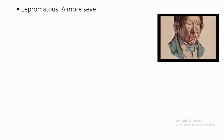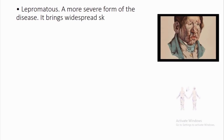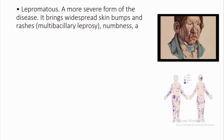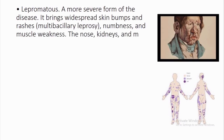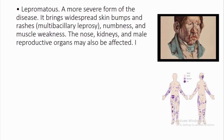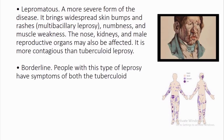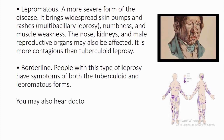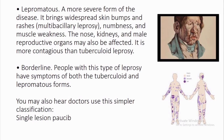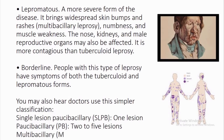Lepromatous: a more severe form of the disease. It brings widespread skin bumps and rashes — multibacillary leprosy — numbness, and muscle weakness. The nose, kidneys, and male reproductive organs may also be affected. It is more contagious than tuberculoid leprosy. Borderline: people with this type have symptoms of both the tuberculoid and lepromatous forms. Doctors also use a simpler classification: single lesion paucibacillary (SLPB, 1 lesion), paucibacillary (PB, 2–5 lesions), and multibacillary (MB, 6 or more lesions).